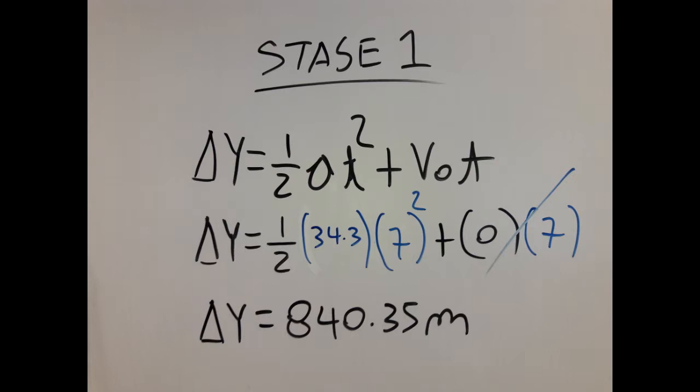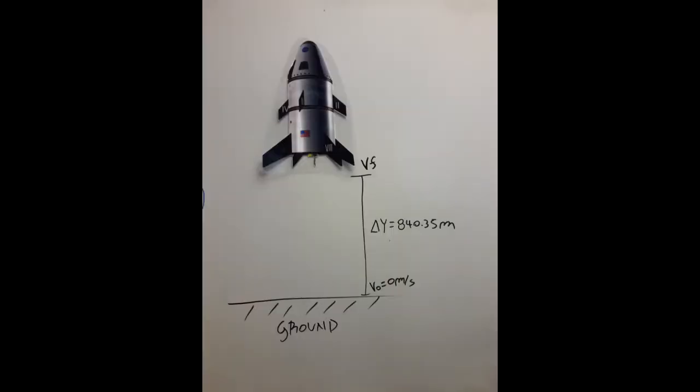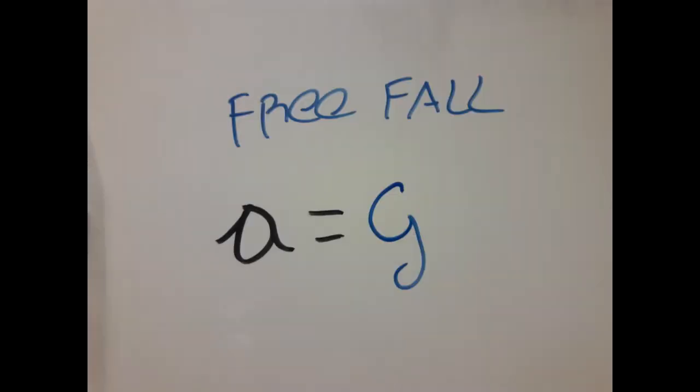This is the altitude the rocket has at the end of the first stage. But then, after the 7 seconds elapsed, the rocket has no more power, so it's going to be in free fall. Acceleration for free fall on Earth is going to be g, or 9.8 meters per second squared.